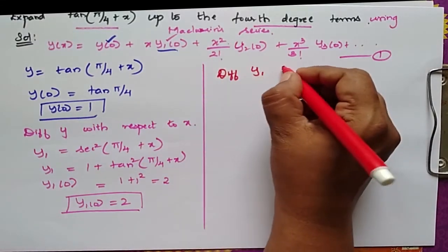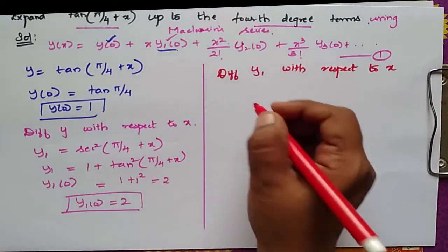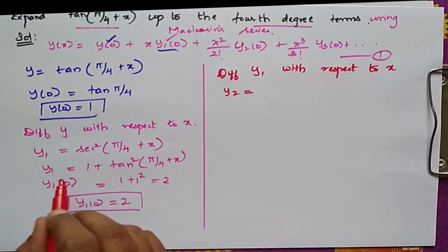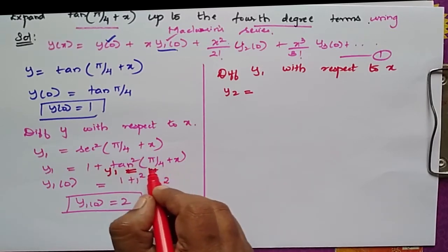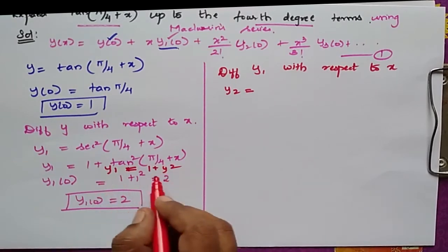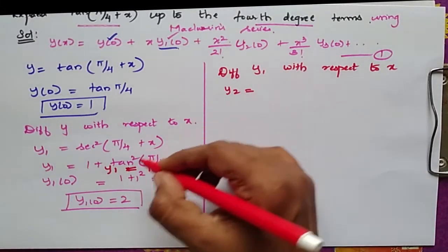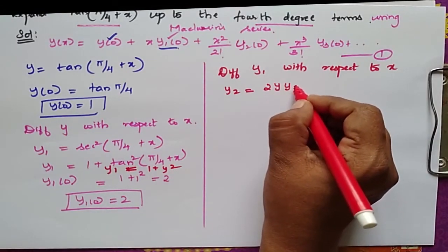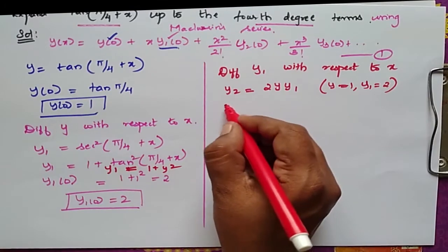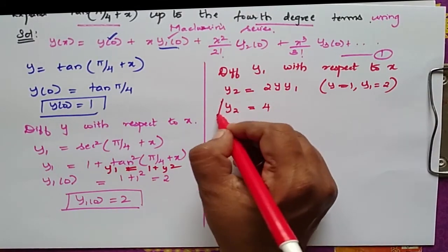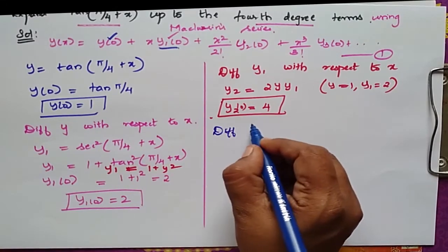Differentiate y1 with respect to x to get y2. Since y1 = 1 + y², differentiating gives y2 = 2y·y1. Substituting x = 0: y2(0) = 2·1·2 = 4.